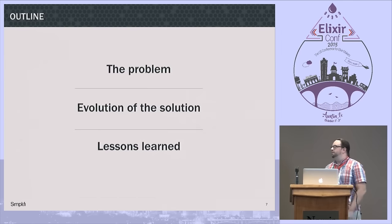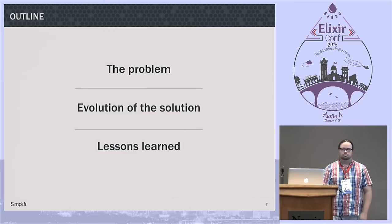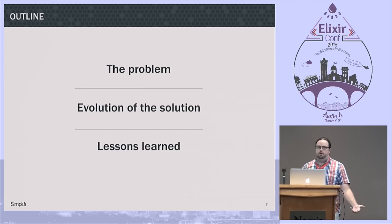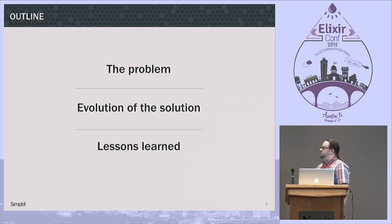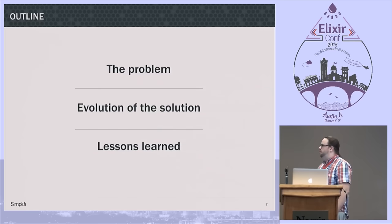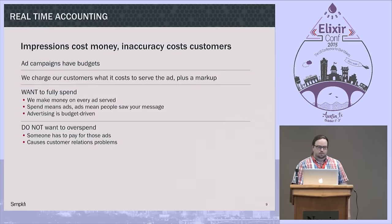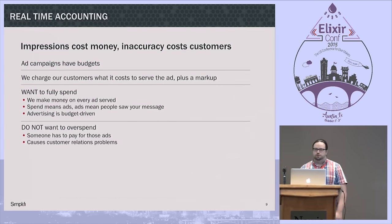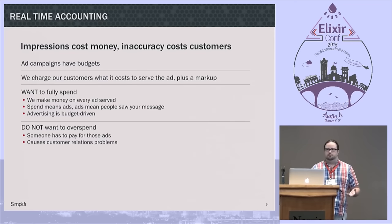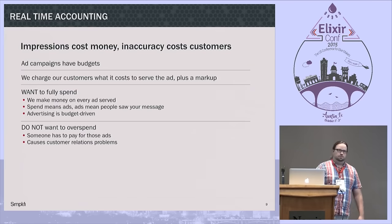I'll explain what problem we're trying to solve and why it's an interesting and hard problem, how the solution has evolved over the last three years, and then I'll say some things and you'll laugh at me. This is a term I made up: real-time accounting. Basically, each one of the ad campaigns we're trying to serve against has a budget. Each one of these ads is a fraction of a penny, so maybe we want to only spend a dollar a day or a hundred dollars a day.